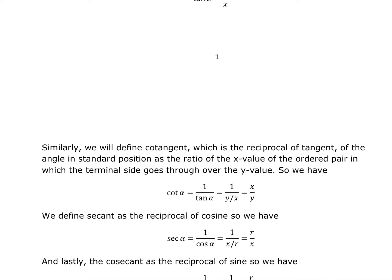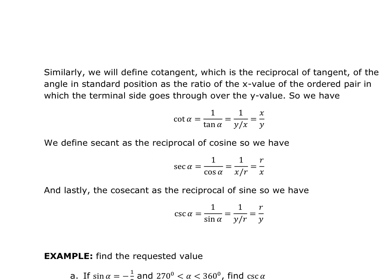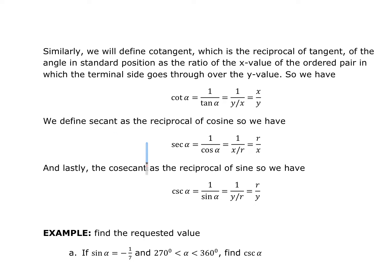We define the cotangent — which is the reciprocal of tangent — as x over y. That is, one over (y/x) equals x/y. We define secant as the reciprocal of cosine: if cosine is x over r, then secant must be r over x. And cosecant, as the reciprocal of sine, must be r over y.